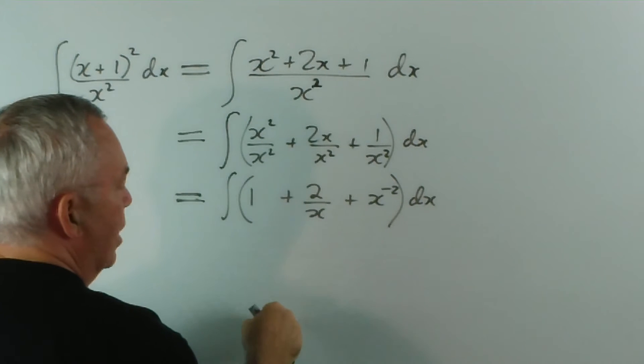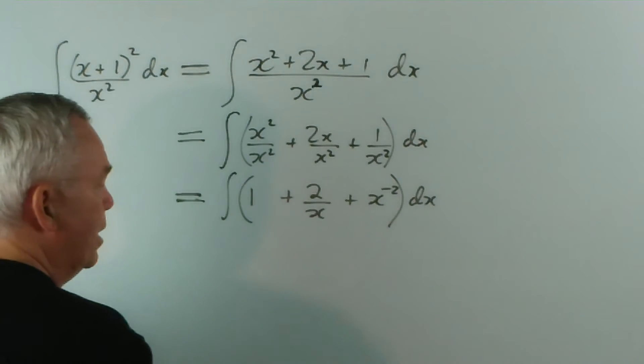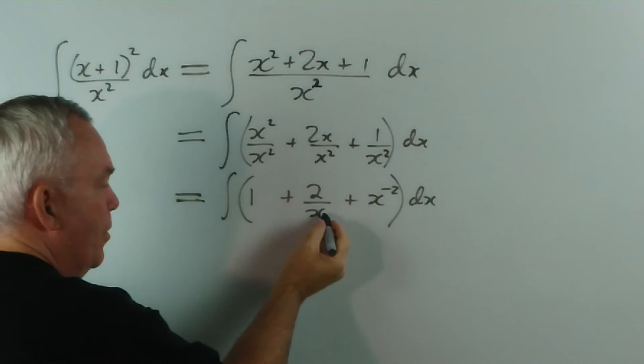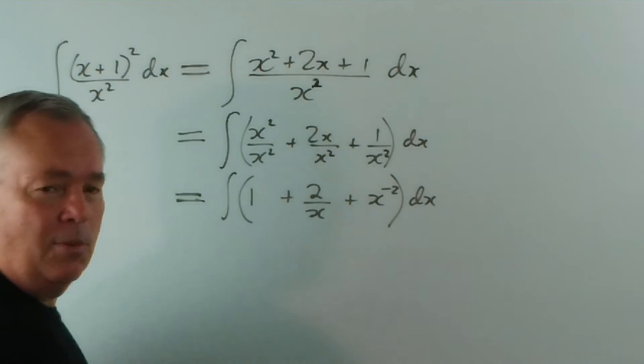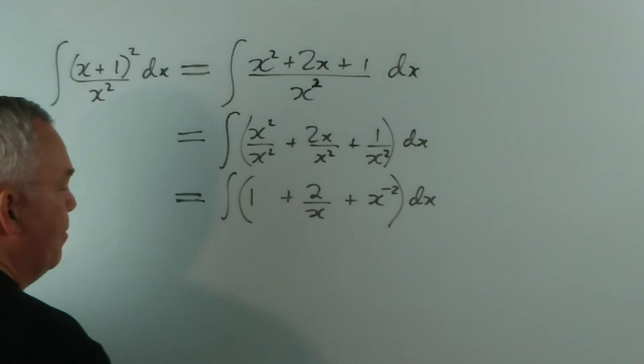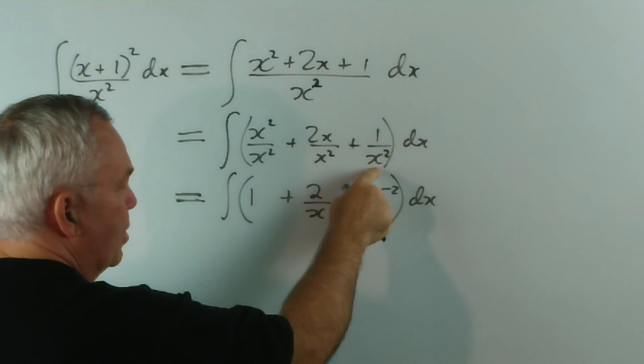Now, why didn't I write this as 2 times x to the minus 1? The reason I didn't is this pattern I recognize, because the derivative of x is 1, and that's basically what I have on the top. I have 2 times 1 if we have a constant. So, this is our logarithmic pattern, whereas this wasn't.